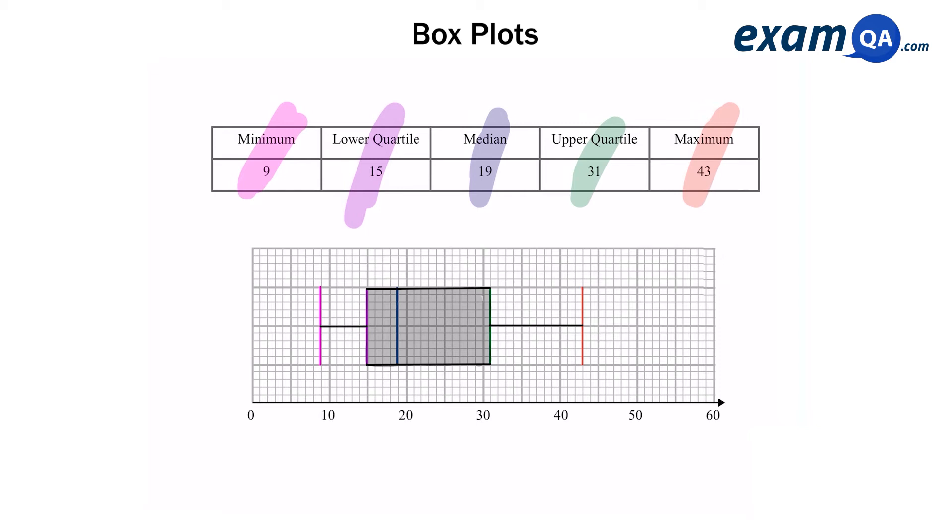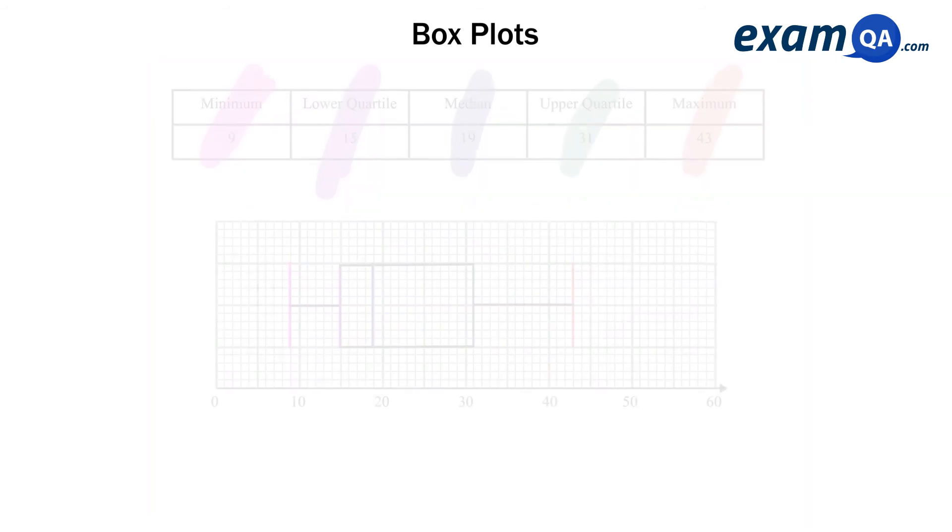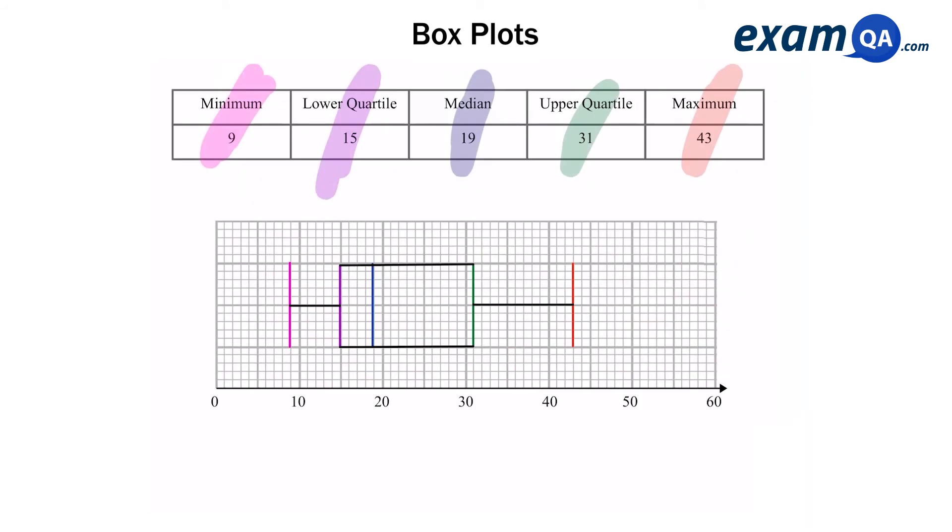Okay let's look at some additional questions which might be asked on our box plot. Part 1: Work out the range. Now the range is simply the largest value, so our maximum value minus the smallest value, which is 43 minus 9 giving us 34.